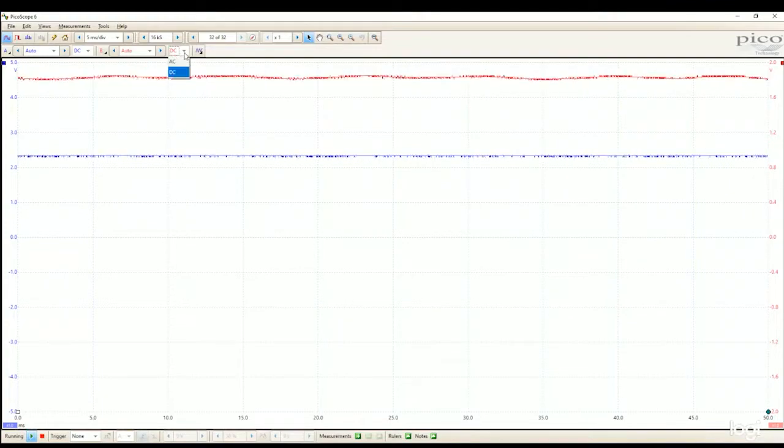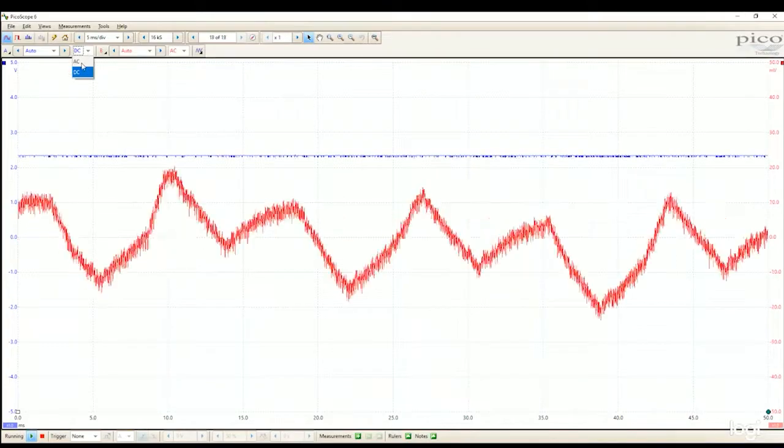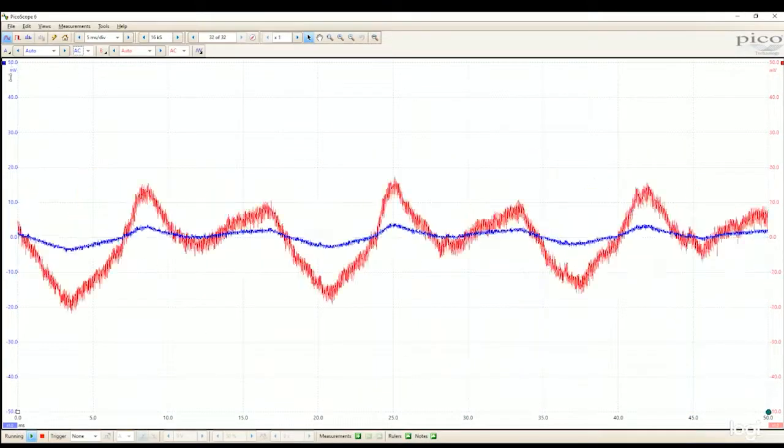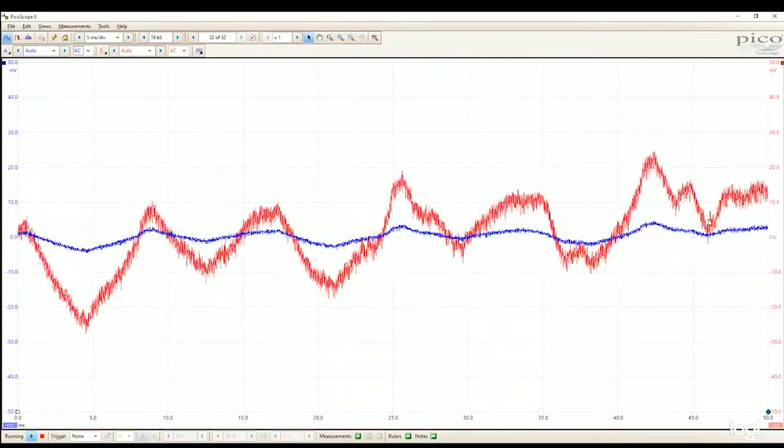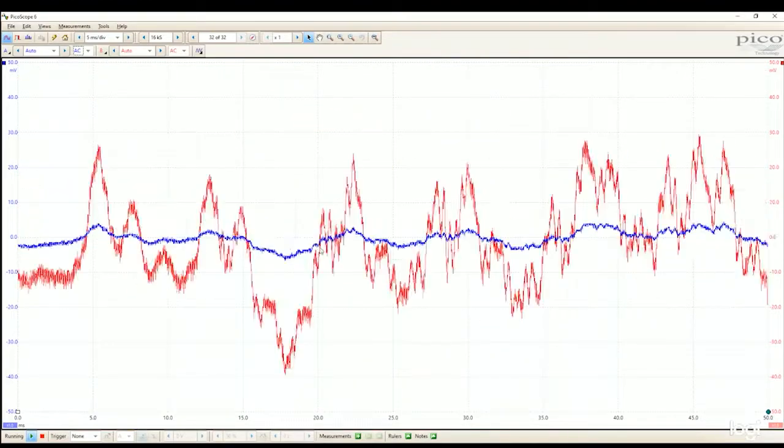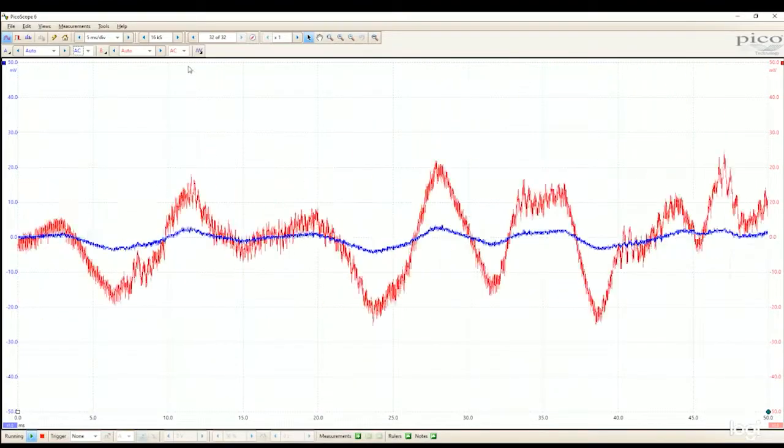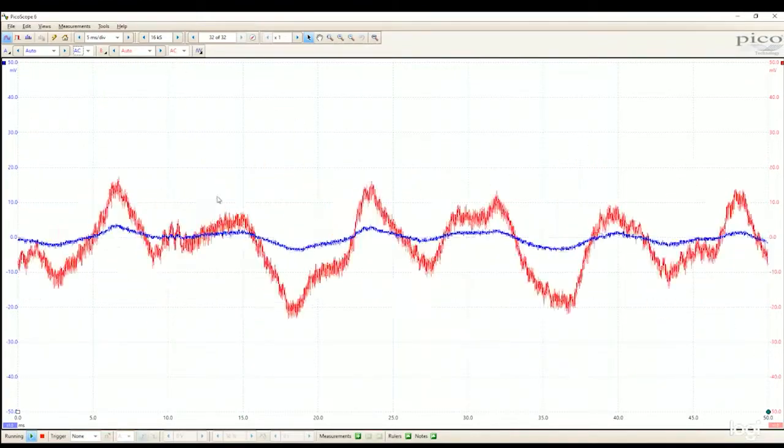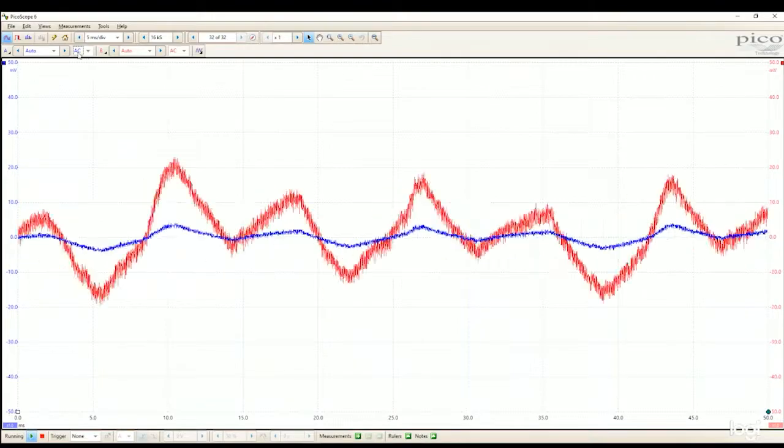So we're going to change these two connections to what they call AC coupled right here. And when I do that, I auto scale and the signal looks bigger. It's actually not. Just the scale's changed. So going from DC to AC blocks the DC coming into the PicoScope. So you're just measuring the AC, which is a time varying waveform.